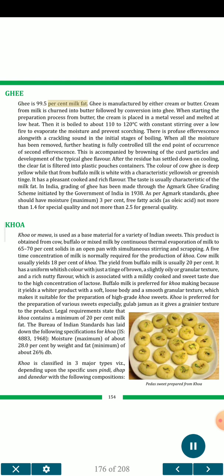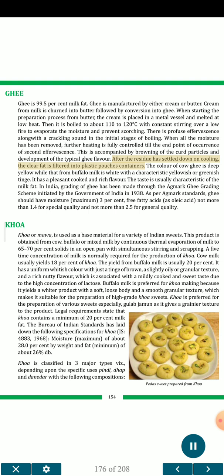Ghee is 99.5 percent milk fat. Ghee is manufactured from either cream or butter. Cream from milk is churned into butter, followed by conversion into ghee. When starting from butter, the cream is placed in a metal vessel and melted at low heat, then boiled to about 110–120 degrees Celsius with constant stirring over a low fire to evaporate the moisture and prevent scorching. There is profuse effervescence along with a crackling sound in the initial stages of boiling. When all the moisture has been removed, further heating is carefully controlled until the endpoint of occurrence of a second effervescence, which is accompanied by browning of the curd particles and development of the typical ghee flavor. After the residue has settled down on cooling, the clear fat is filtered into plastic pouches or containers. The color of cow ghee is deep yellow while that from buffalo milk is white with a characteristic yellowish or greenish tinge. In India, grading of ghee has been made through the Agmark Ghee Grading Scheme initiated by the Government of India in 1938. As per Agmark standards, ghee should have moisture maximum 3%, free fatty acids (as oleic acid) not more than 1.4% for special quality and not more than 2.5% for general quality.